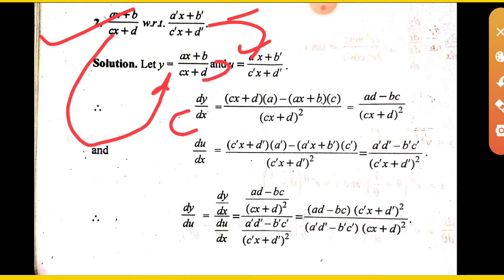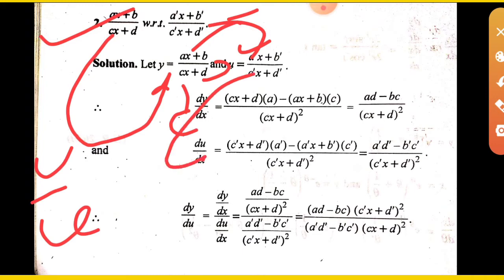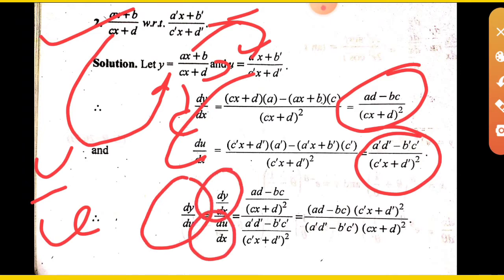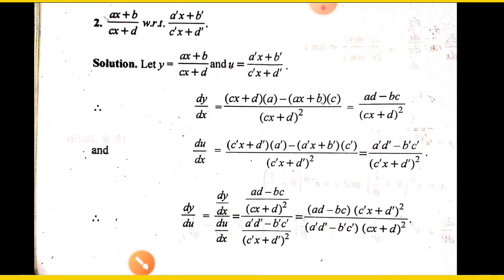We use the u upon v quotient rule formula. Similarly, find du upon dx. Then dy upon du equals dy upon dx divided by du upon dx. Clear?